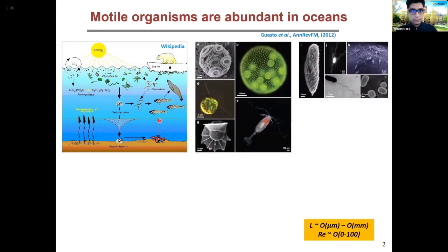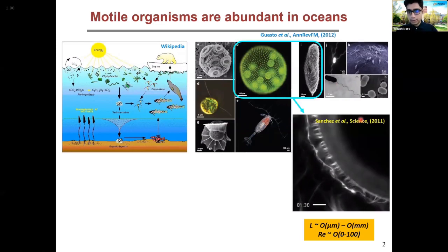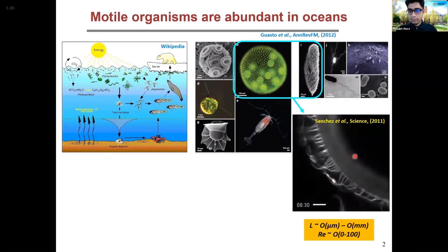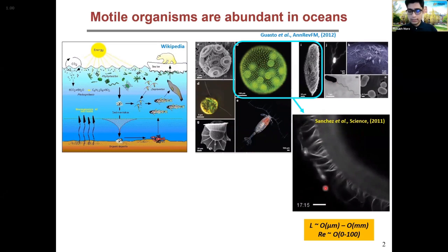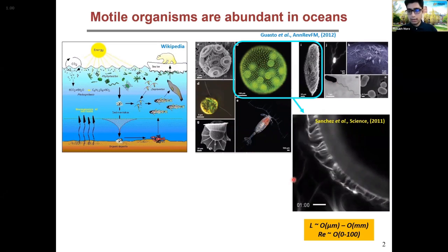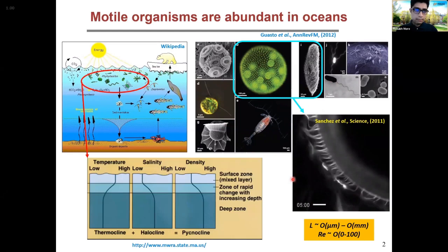If we focus mainly on phytoplanktons and zooplanktons and other small-scale organisms, they basically come in a different variety of shapes and sizes, and they use different mechanisms to move. One such mechanism is the presence of cilia — an array of cilia on their surfaces. For this talk, I'll be using the ciliary kind of motion as a model.